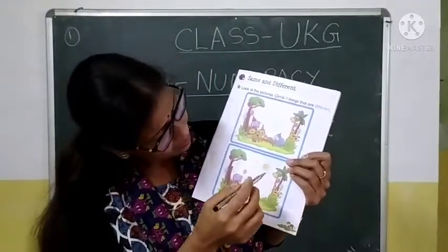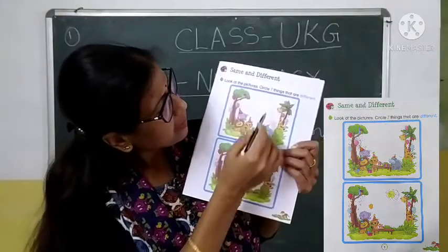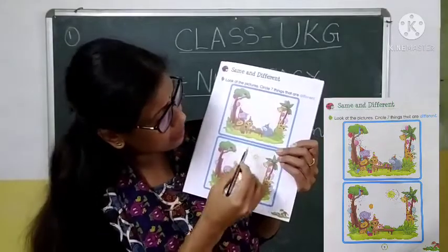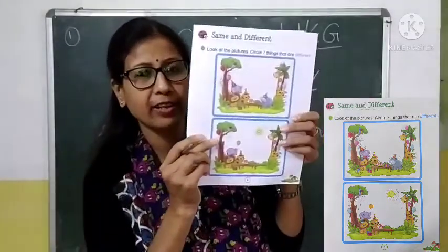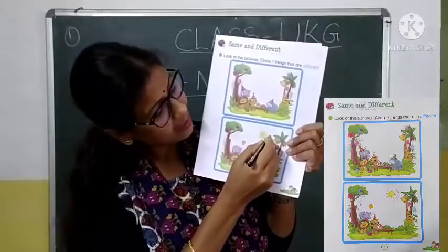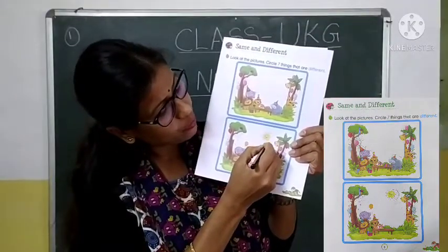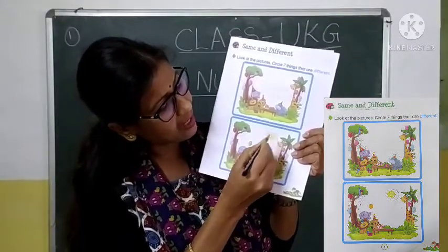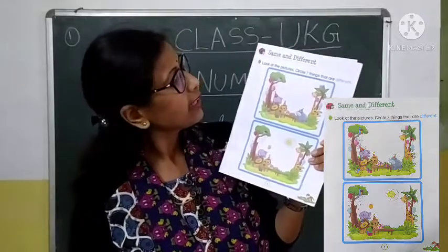See the difference? Here it is sun. Here no sun. So this is different. Sun is different from that picture. So circle the sun.